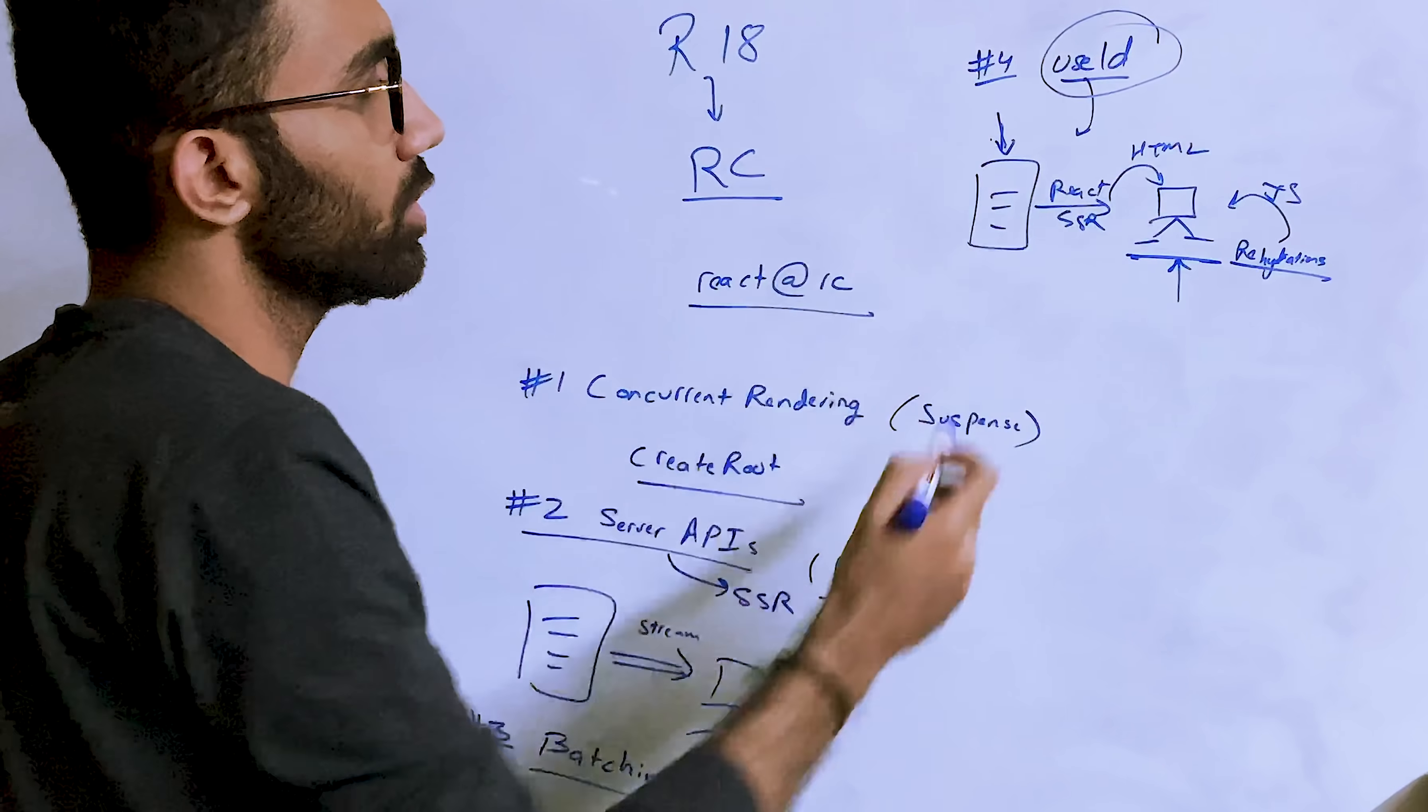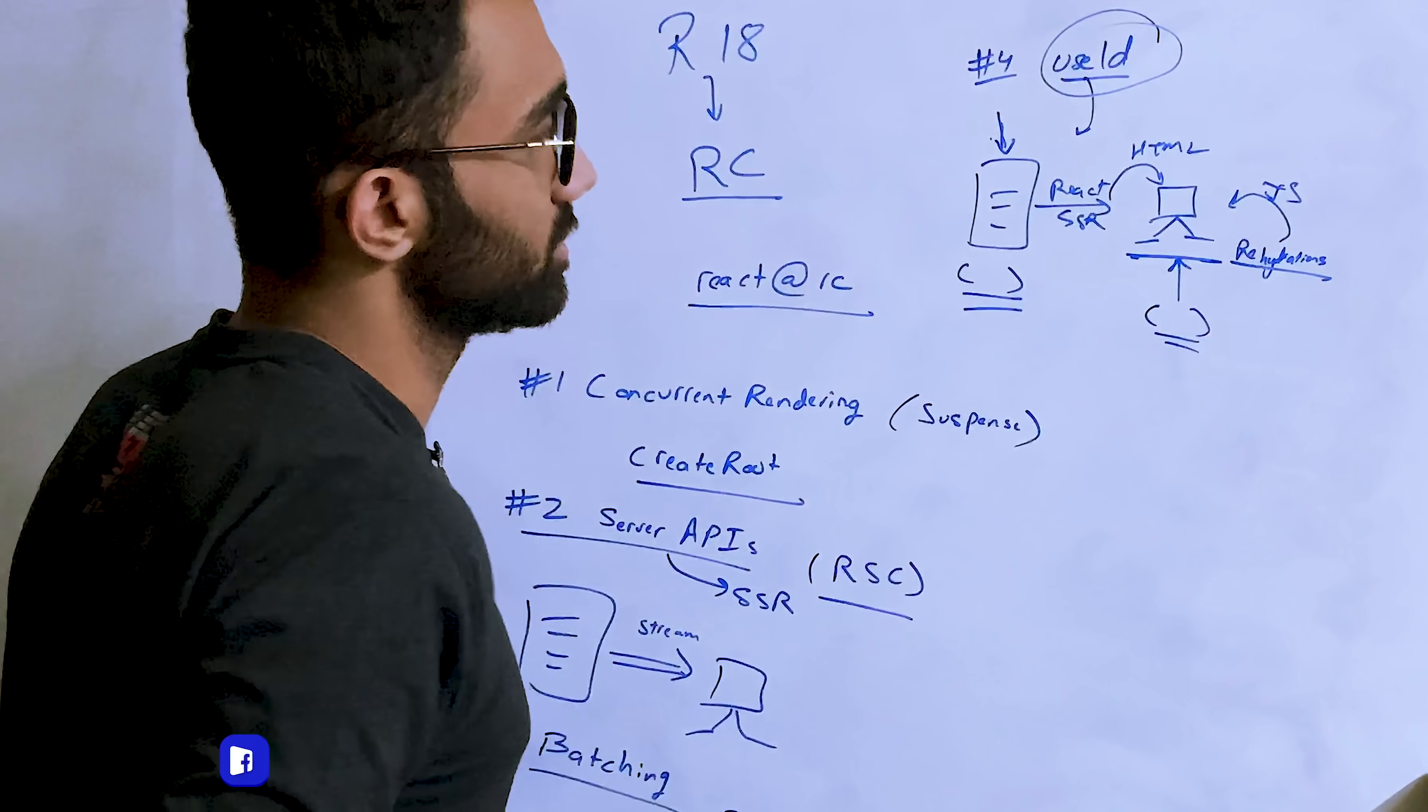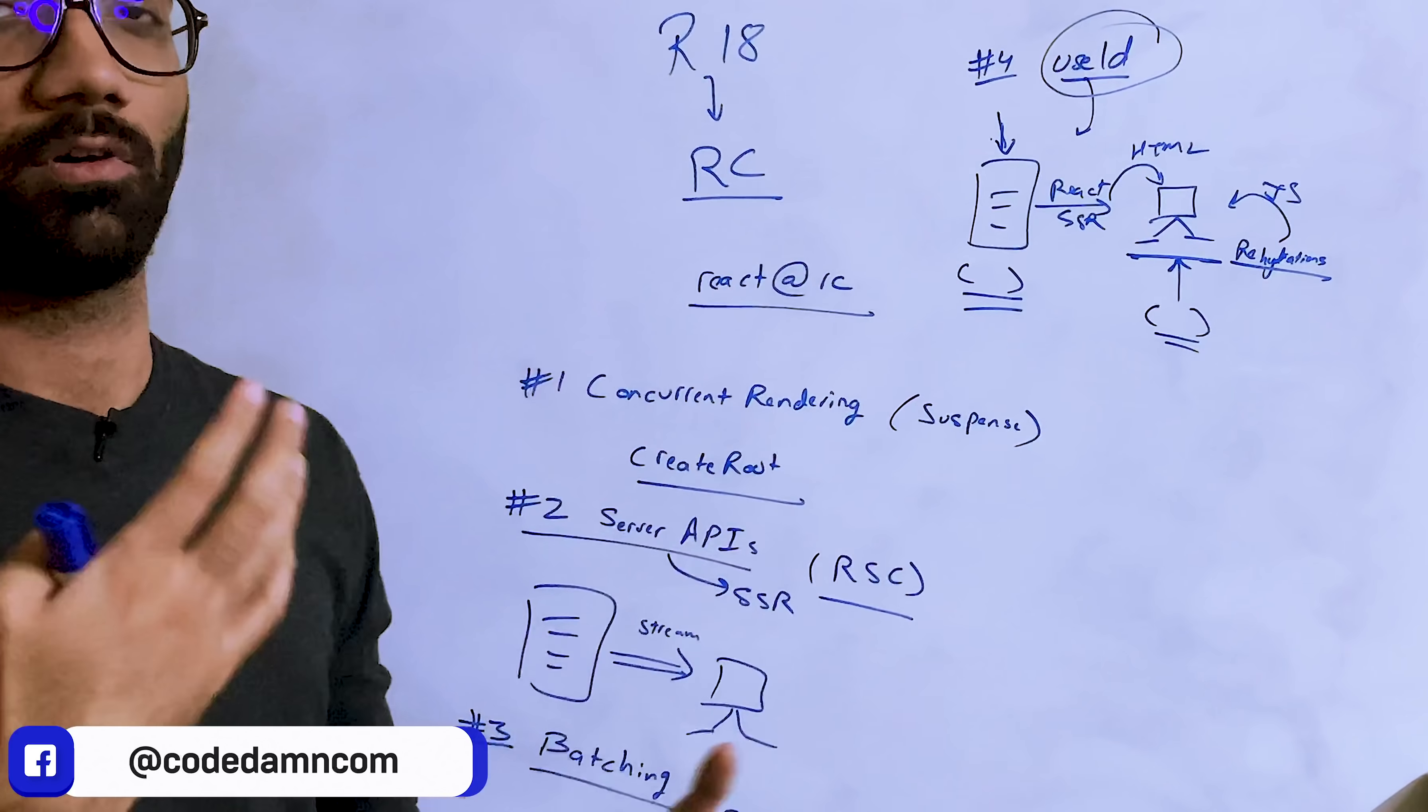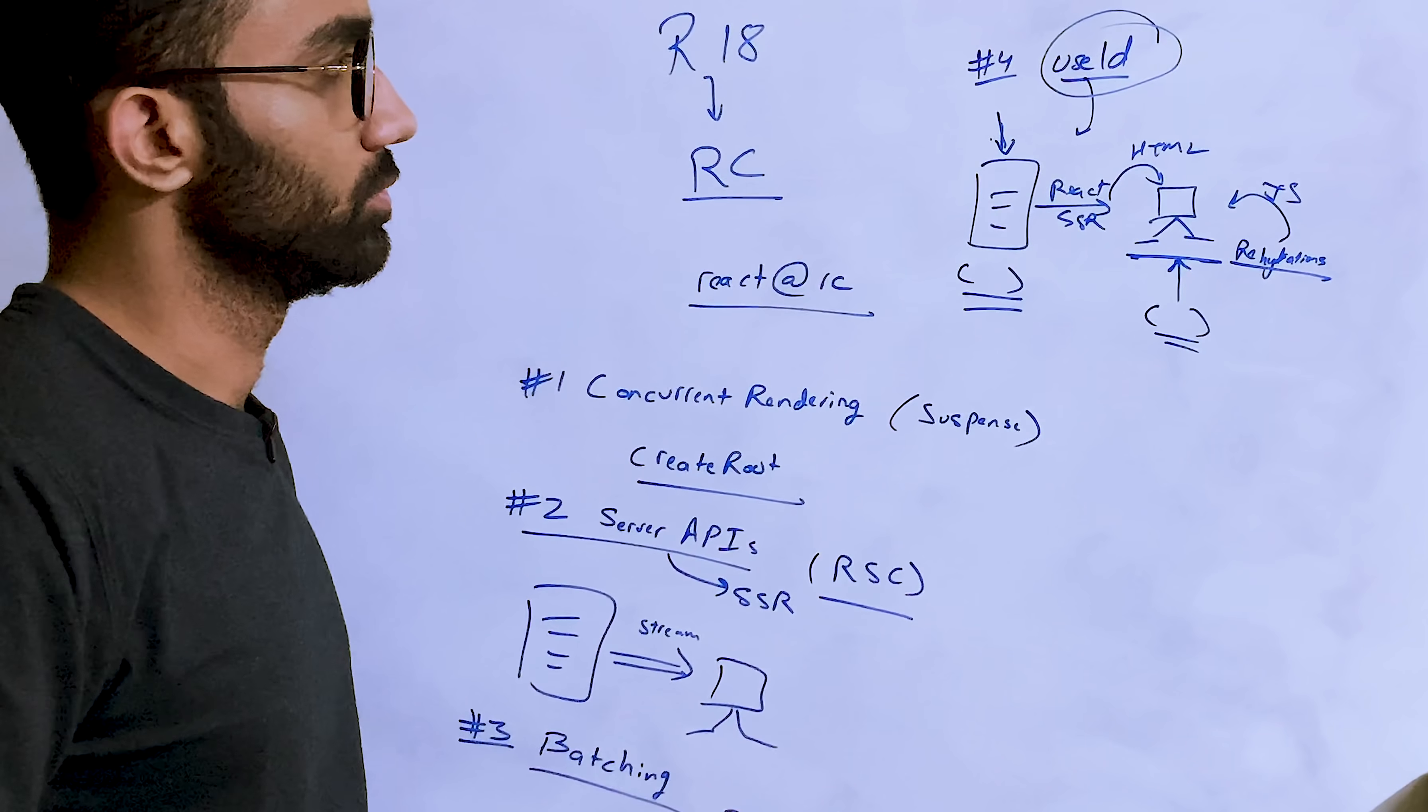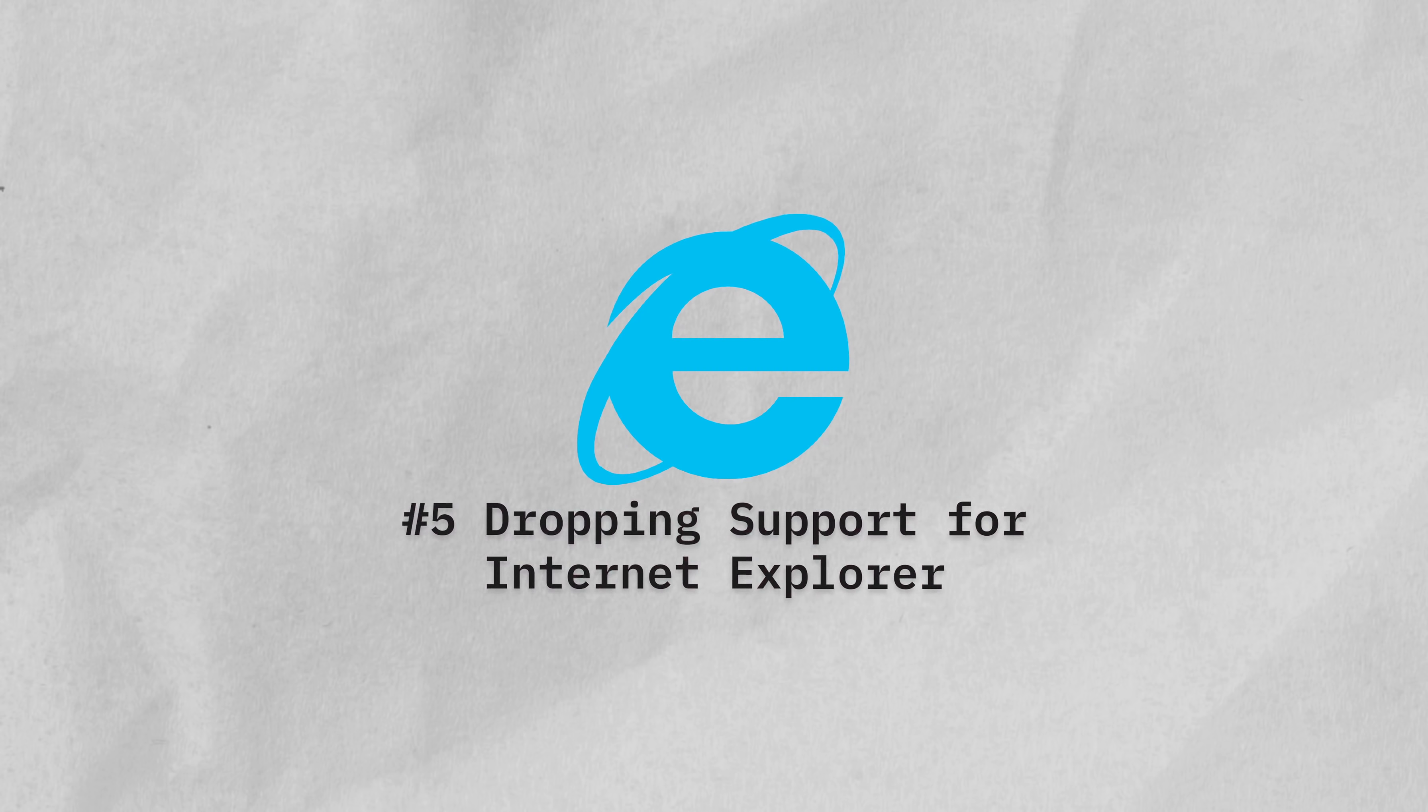Usually that is in cases of keys or stuff which is client specific. The useId is a new hook which allows you to create deterministic keys or deterministic values on server and client both. It's important in React 18 because of how concurrent rendering works and how things will arrive out of order in React 18 on the client. We'll discuss more about this in future videos.